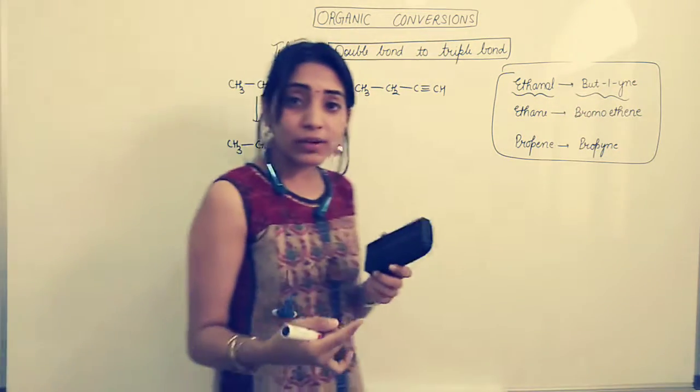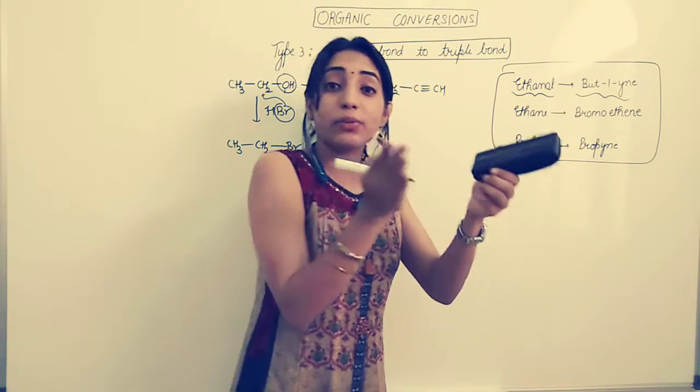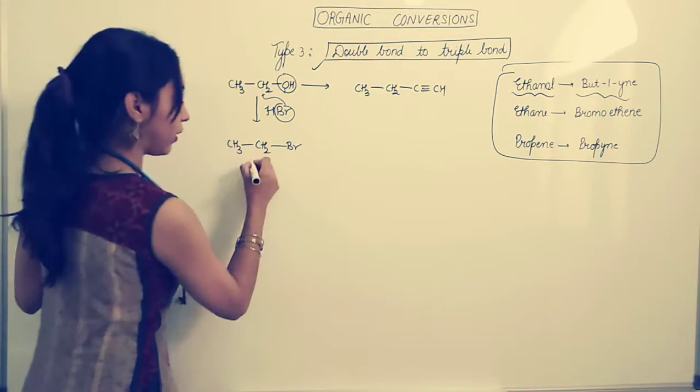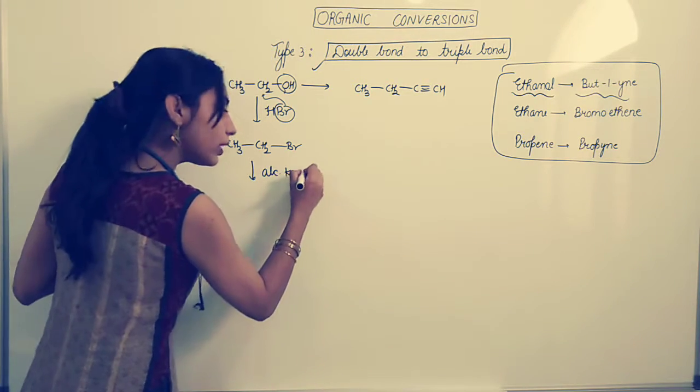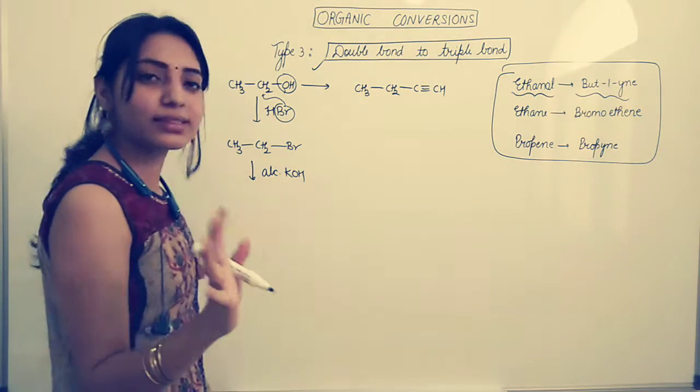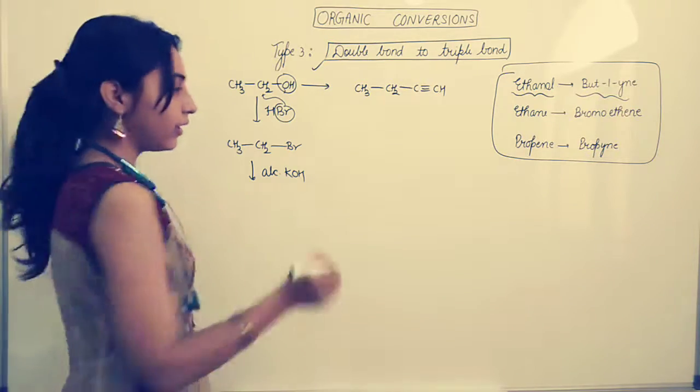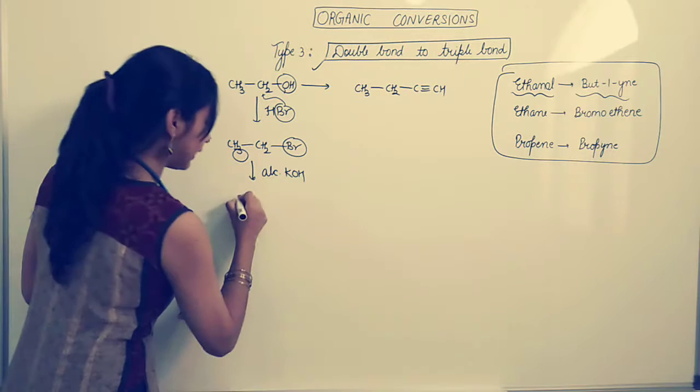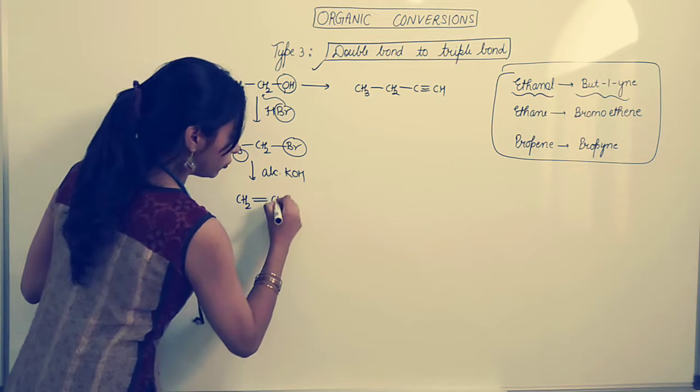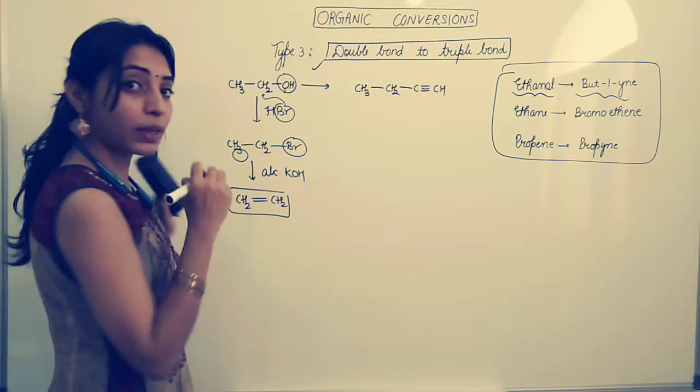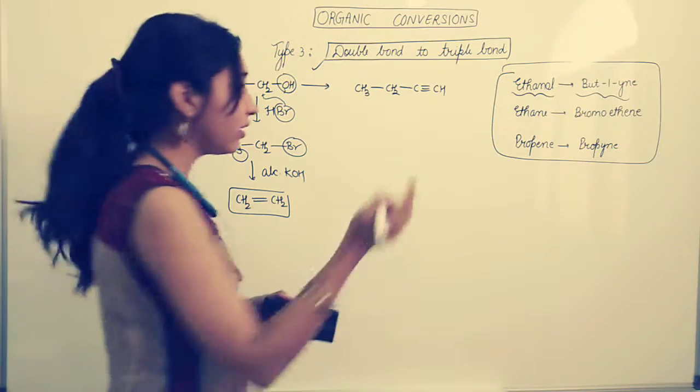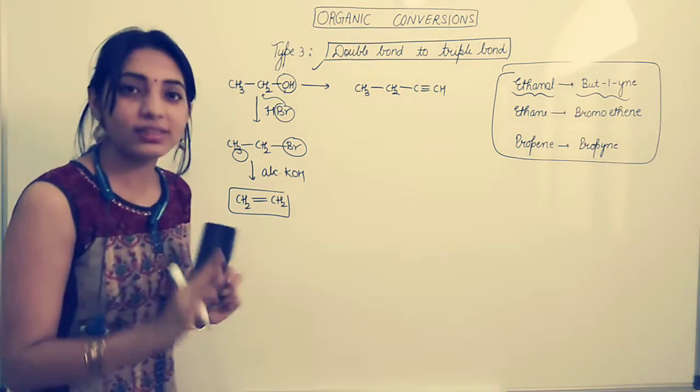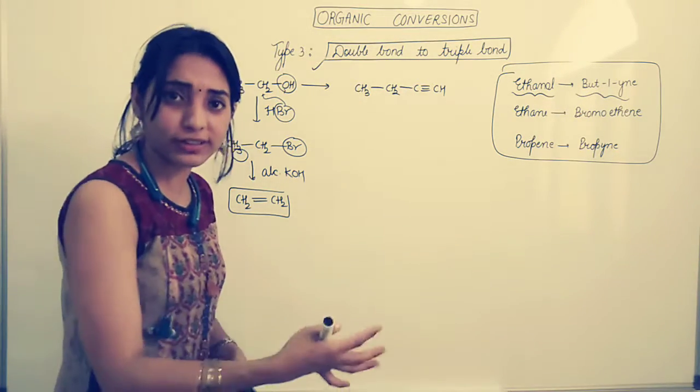Then we got alkyl halide. Now what did I tell you earlier? Alkyl halide can be converted to alkene. So let's do the reaction and make it alkene. We add alcoholic KOH. This is easy. So what will happen? Br goes from here, H goes from here. It gets converted to CH2 double bond CH2. But did we get the product which we wanted? We wanted alkyne. We just got alkene. That means reaction cannot stop here. It has to go further.